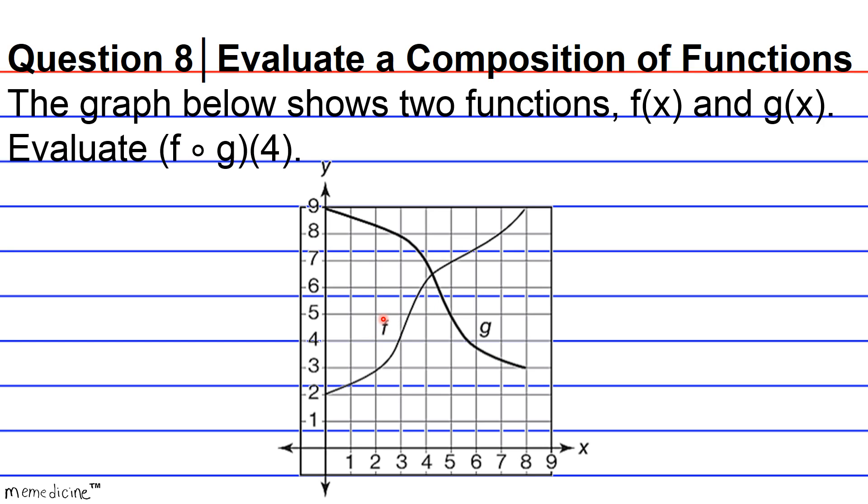Okay, so what this means is find the value of the function g. This is our function g, the bold line. We're going to find the value of this at 4. Okay, and then we're going to take this result, or the output, and we're going to use it as the independent variable for the function f. And we're going to get a result, okay?